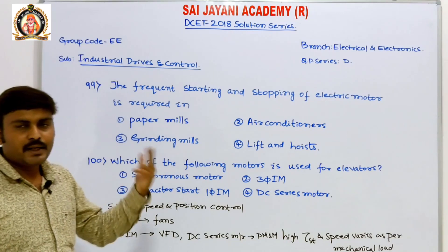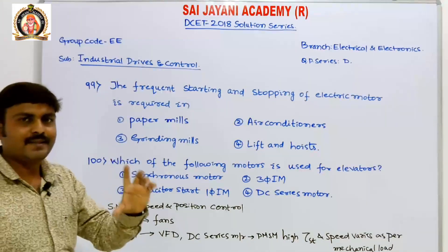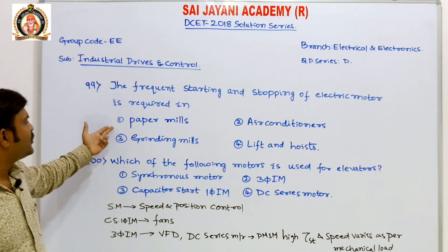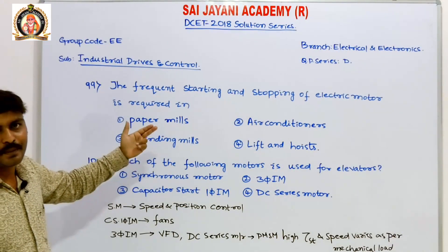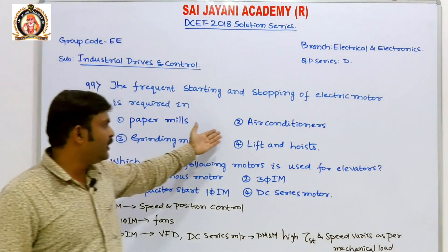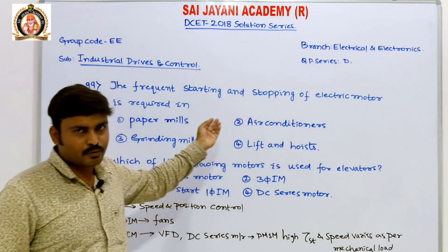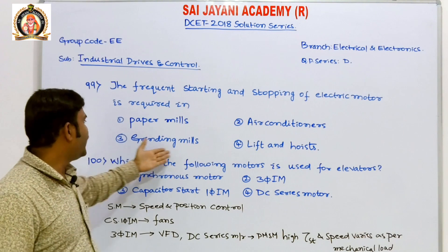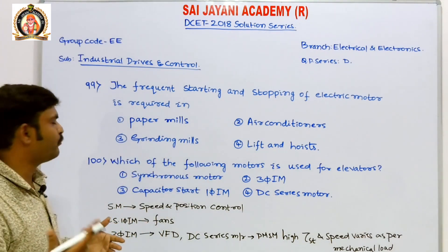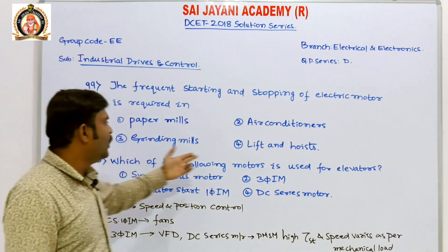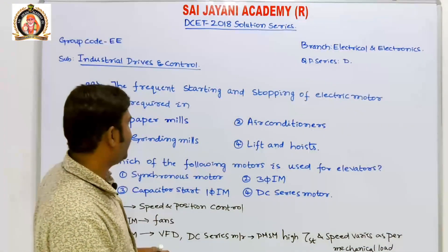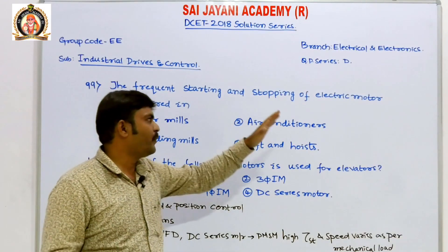Frequent starting and stopping of motor is called jogging. Where is jogging required? It is not required in paper mills — the motors will be running continuously. In air conditioners also, jogging is not required. In grinding mills also, there is no frequent starting and stopping of motor. But in lifts and hoists, there should be jogging. Jogging means frequent starting and stopping of motor.